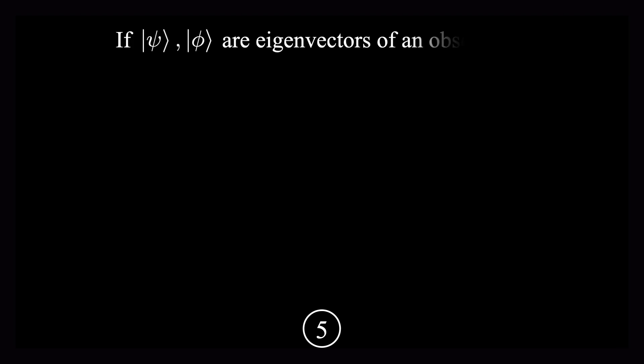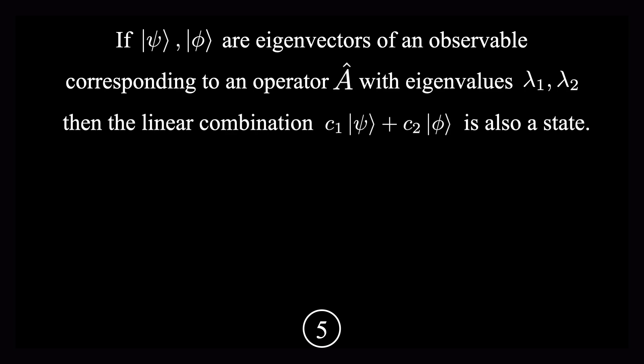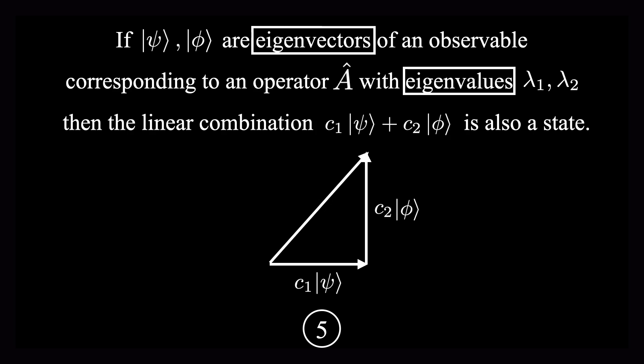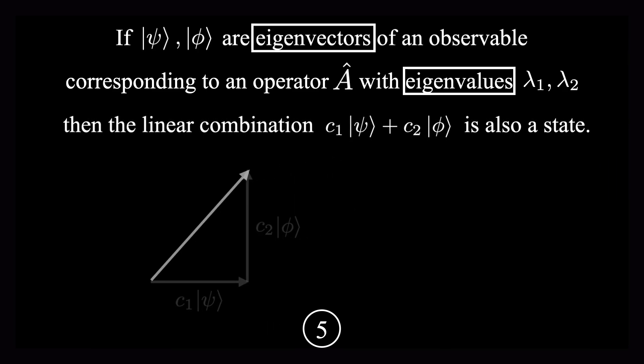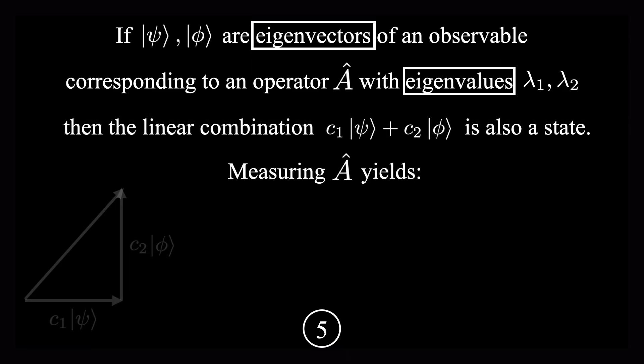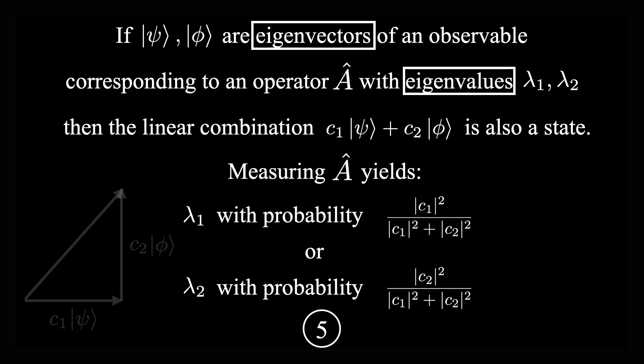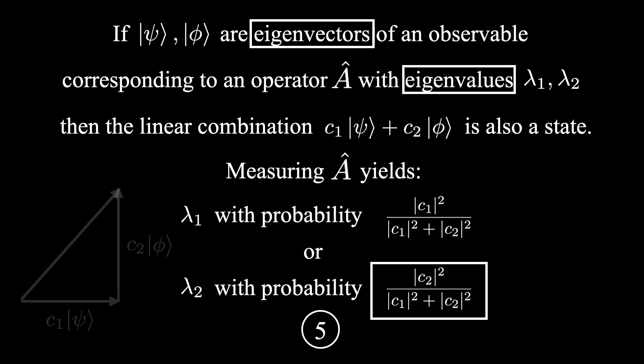Now for the final axiom. This axiom commonly goes by the name of the Born rule. It says that if you have two eigenvectors, psi and phi, of an observable A, with eigenvalues lambda 1 and lambda 2, then you can form another state by taking a linear combination of the two. This is what is known as superposition in quantum mechanics. And recall that axiom 3 told us that the only possible results of a measurement are eigenvalues. So when you measure A, you can get either lambda 1 with this probability, or lambda 2 with this probability.